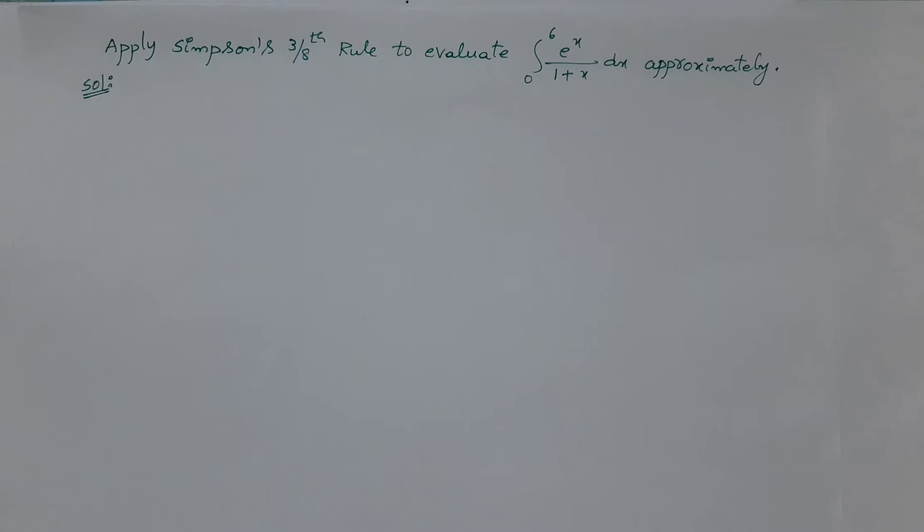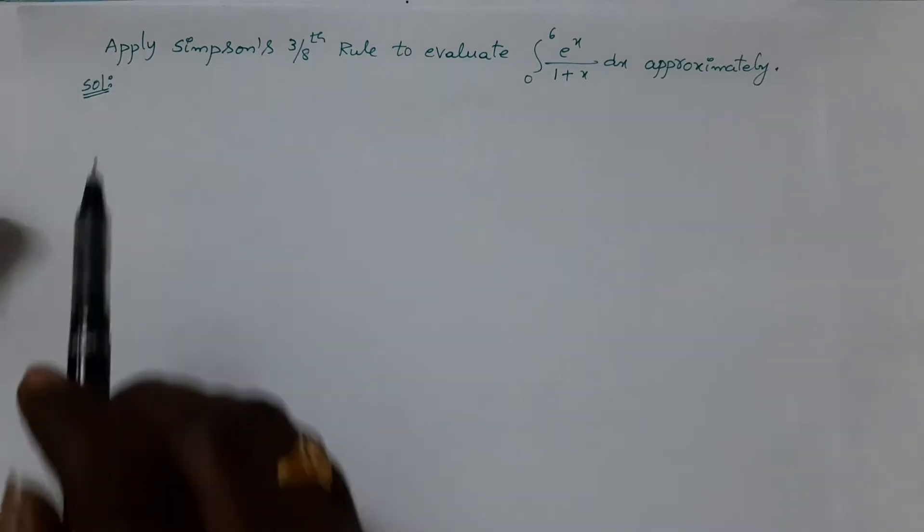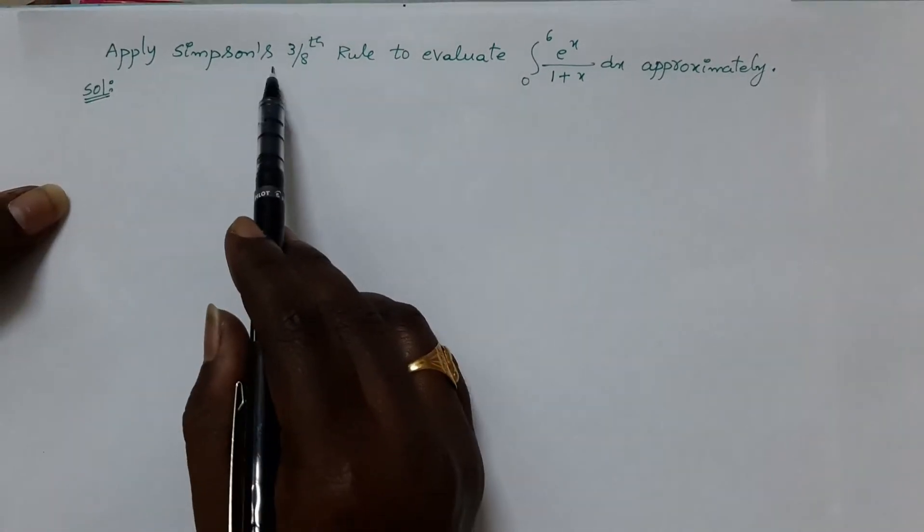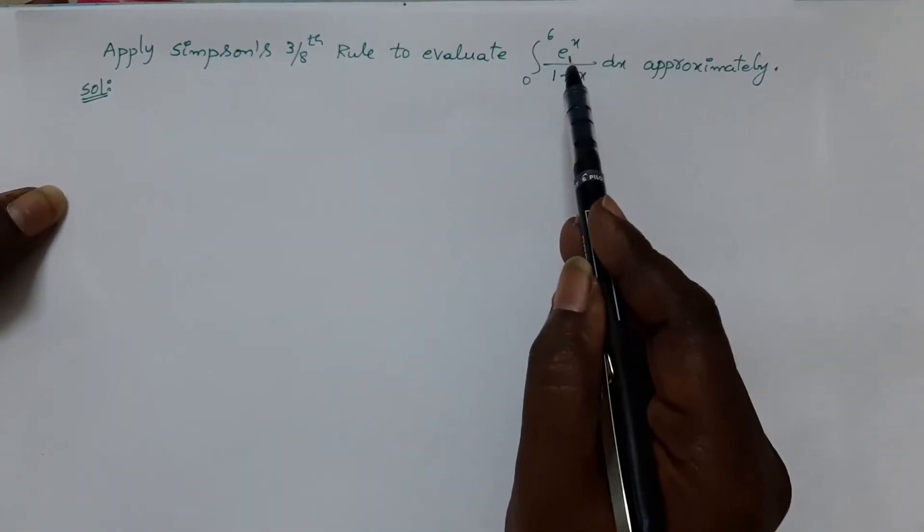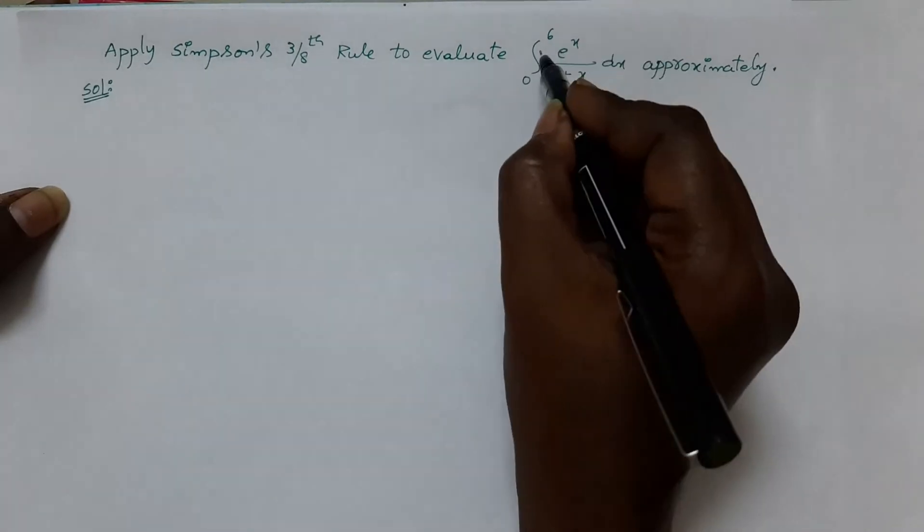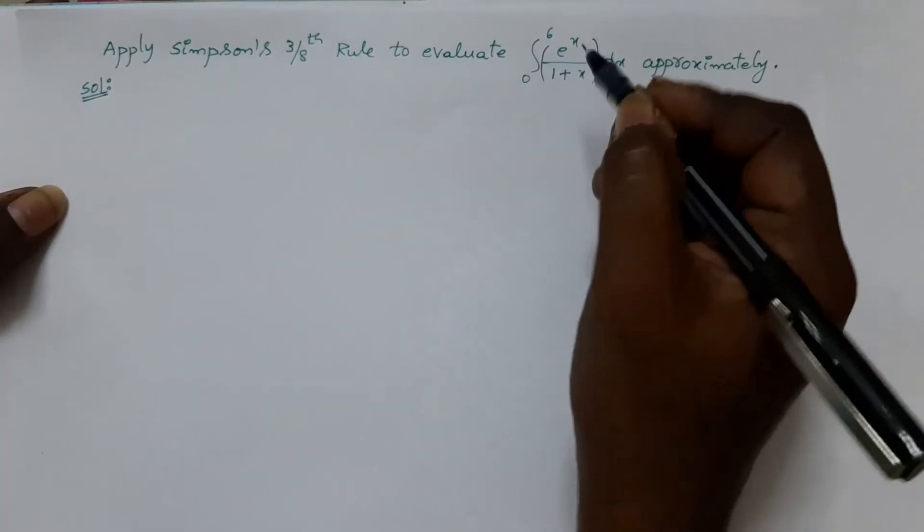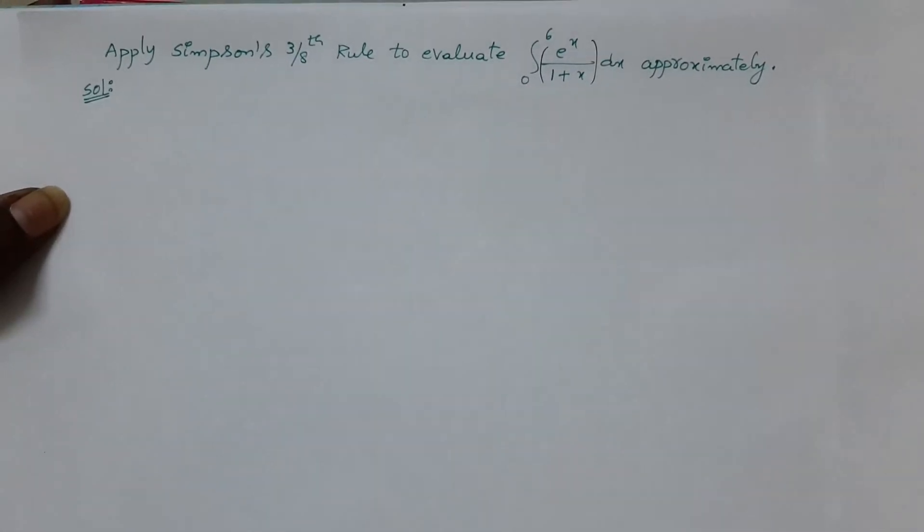I will give another problem on Simpson's 3/8th rule. Apply Simpson's 3/8th rule to evaluate integral 0 to 6 e power x by 1 plus x dx. This is the given function, approximately.